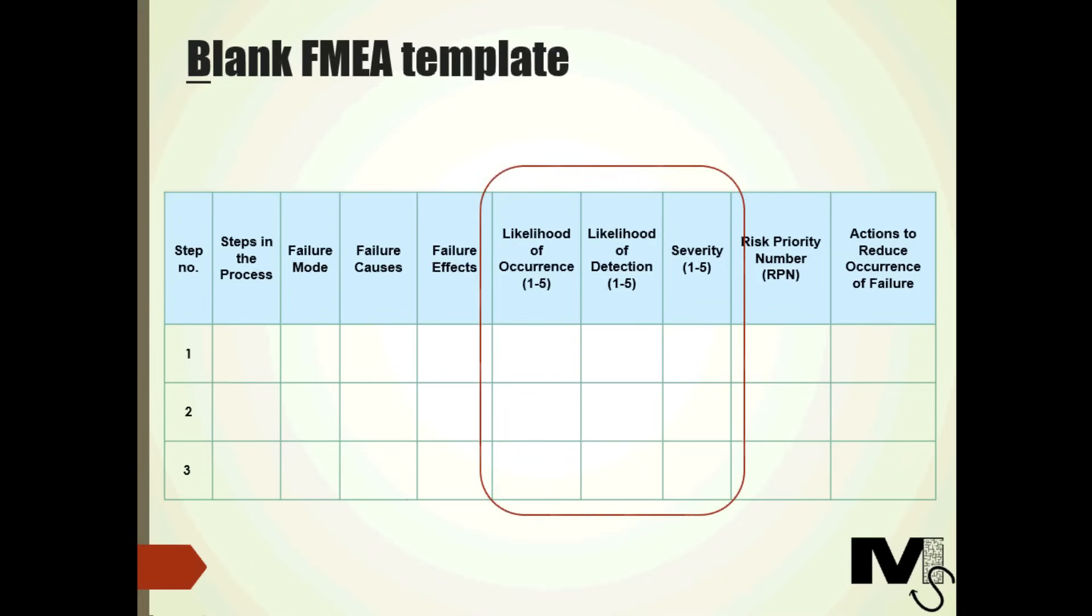Now we get to the rated columns. Here we note the likelihood of occurrence, of detection and severity. We will go through ratings once again when we look at the steps we usually take to produce an FMEA.